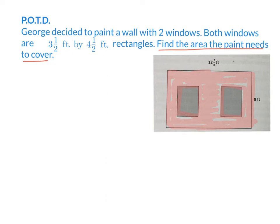So we know that we have to first find the area of the whole wall, which would be 12 and 7/8 times 8, right? And then we have to take away the area of the windows, which would be 3 1/2 by 4 1/2. But it's very important to know that how many windows are there? Two windows. So let's first find the area of the entire wall. We can find that by doing 12 and 7/8 times 8.